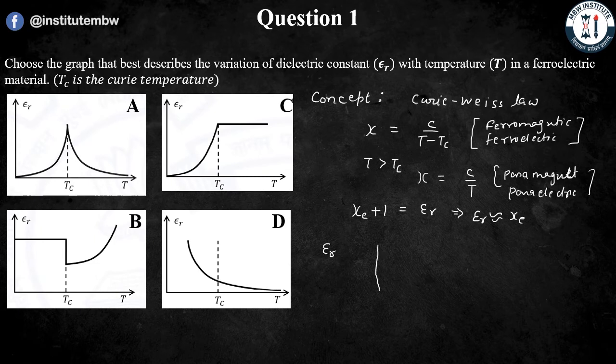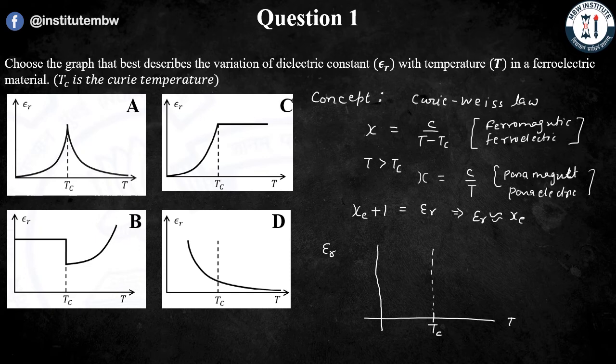So if we draw epsilon R versus temperature and mark Curie temperature TC, above TC it will behave like paraelectric and the graph will be like this. Below TC, below the Curie temperature, the graph will be like this.